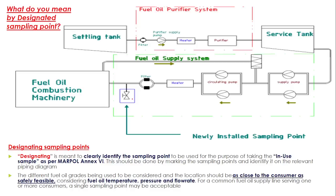Designating means the in-use sample should be made at a point where it should be as close as possible to the fuel combustion machinery. And it should not have any adverse effect — when you are making a sampling point, you should consider certain things. It should not have any adverse effect — when you are collecting a sample, it may spill, and at that time it should not fall on any hot surface which may cause a fire.